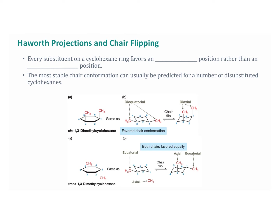Every substituent on a cyclohexane ring favors an equatorial position rather than an axial position, and the most stable chair conformation can usually be predicted for a number of disubstituted cyclohexanes.